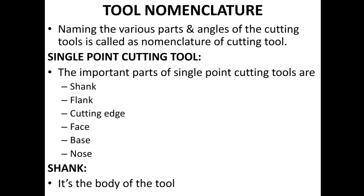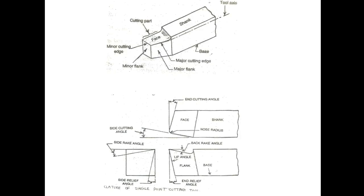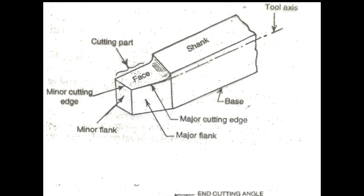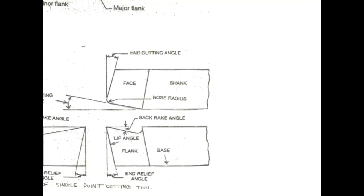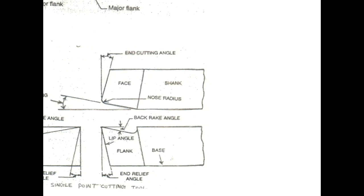Single point cutting tool: the important parts of the single point cutting tools are shank, flank, cutting edge, face, base, and nose. This diagram shows the single point cutting tool with its parts: minor cutting edge, minor flank, major flank, major cutting edge, base, tool axis, end cutting angle, face, and shank.